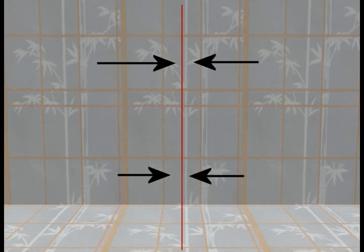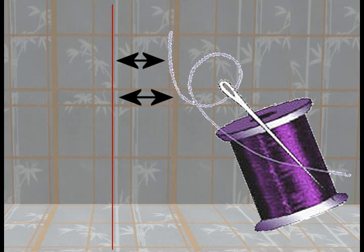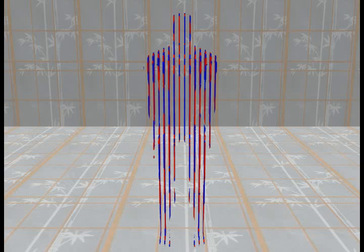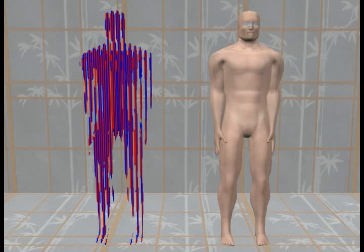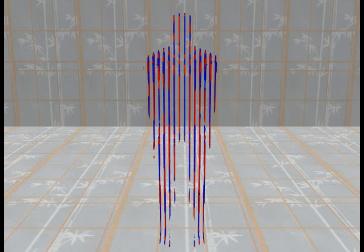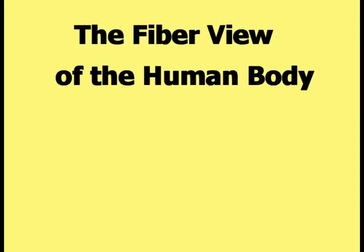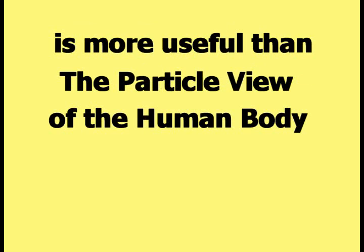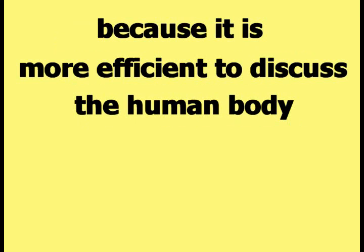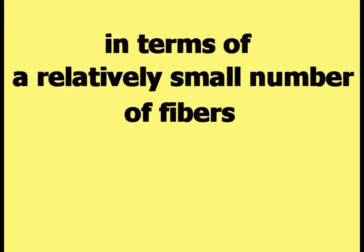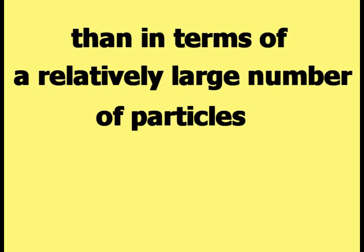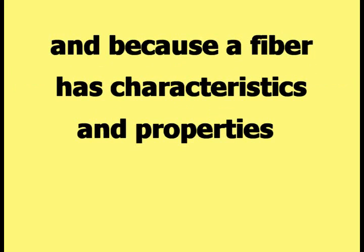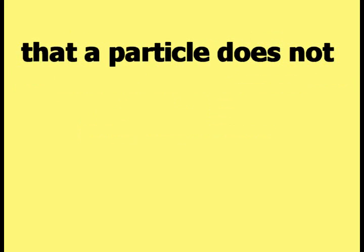The very thin rectangular box in this picture was used to represent a fiber. This picture shows a small number of the fiber objects gathered together in the shape of a human body, to provide an example of what the fiber view of the human body looks like. The fiber view of the human body is more useful than the particle view because it is more efficient to discuss the human body in terms of a relatively small number of fibers than a relatively large number of particles, and because a fiber has characteristics and properties that a particle does not.